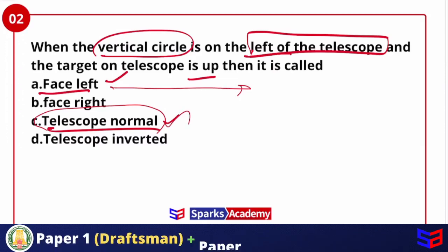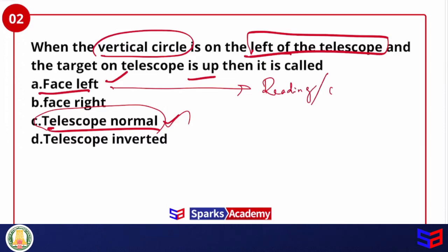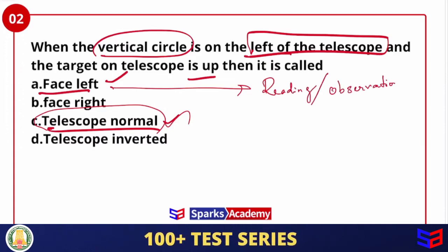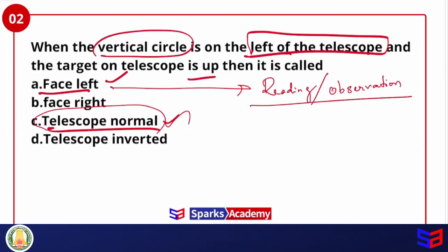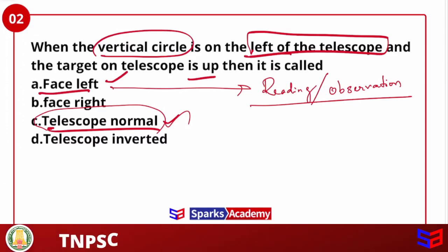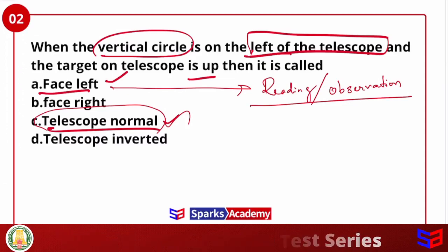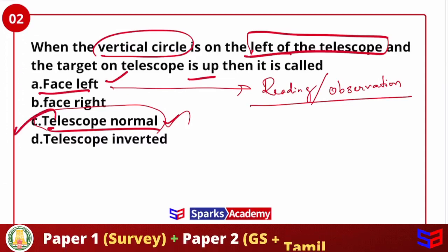Face Left is associated with Telescopic Normal position. The position of the telescope represented here — vertical circle on the left, target up — corresponds to Telescope Normal. When we take observations we have Face Right and Face Left readings. Based on the position described in the question, the answer is option C: Telescope Normal.